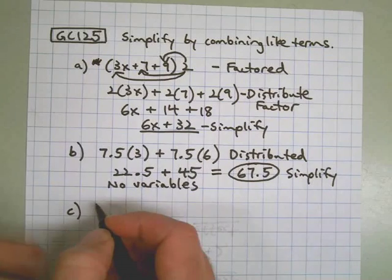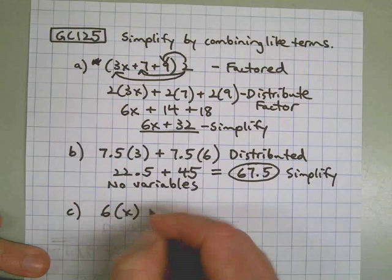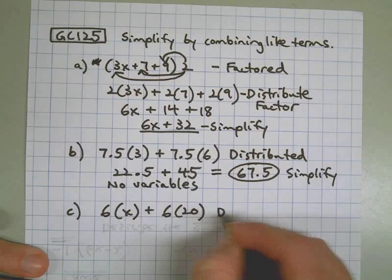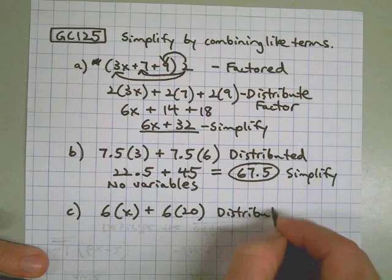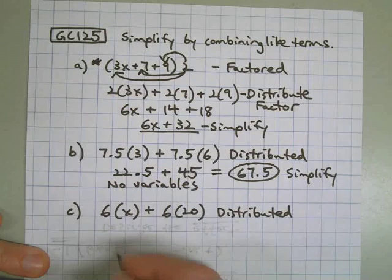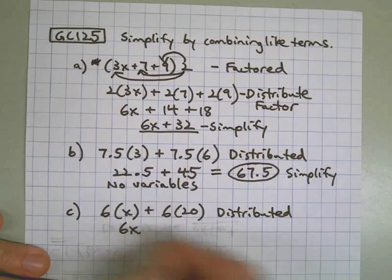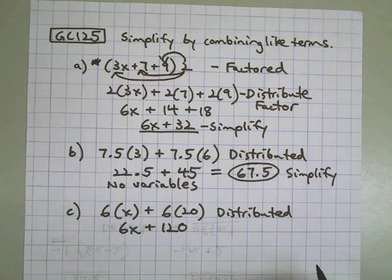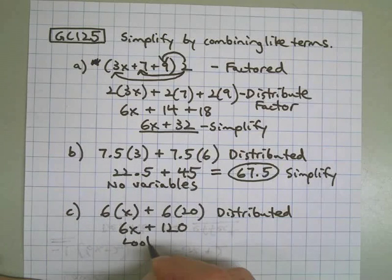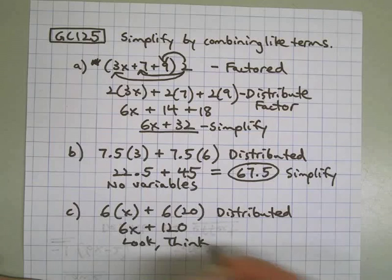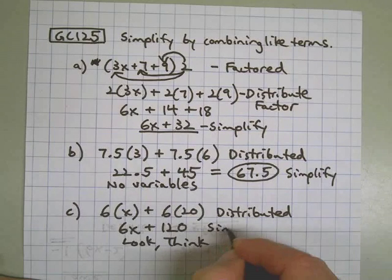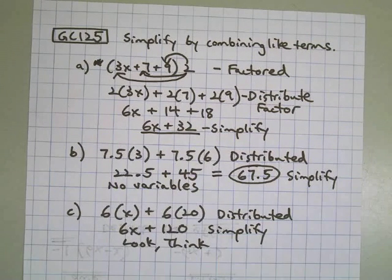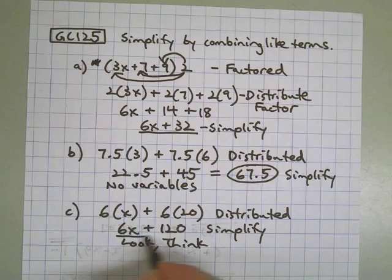Part C: 6 times x and 6 times 20. Once again, we're already in distributed form, so let's do some simplifying. 6x and 6 twenties — that's all I can do. All the parentheses are gone and we've done all the math we can. I can't put together 6x and 120; I cannot put those together and make it into one answer. So that's the answer — it's simplified.